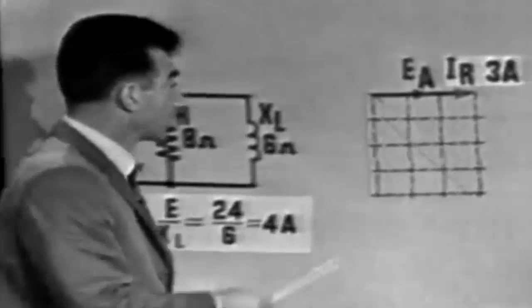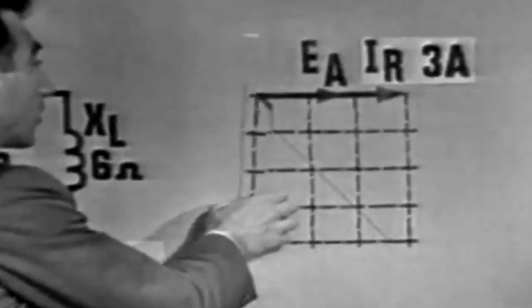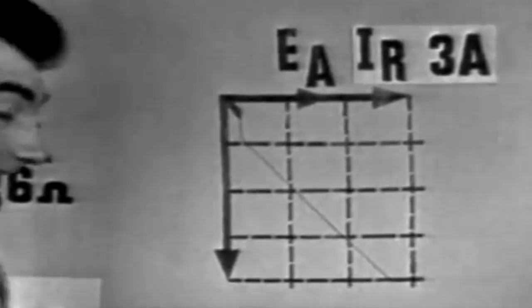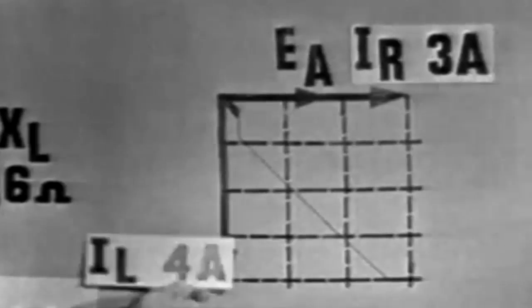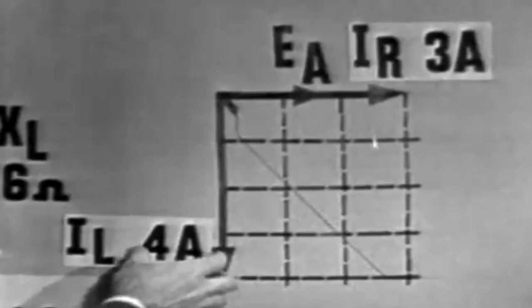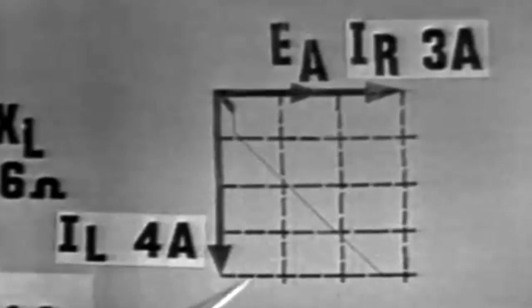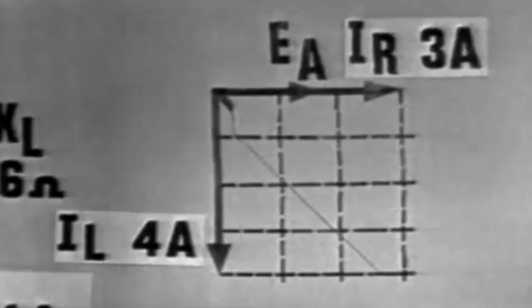Now, when we plot IL on the vector graph, we must show the 90 degree phase difference. Remember, IL lags EA by 90 degrees. And it is a value of 4 amperes, so we'll use 4 units on our graph to represent IL.